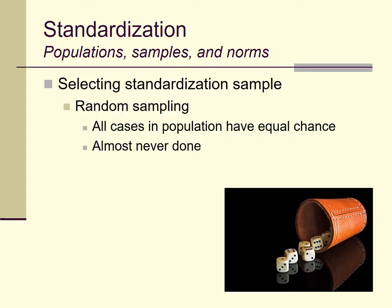How would you give everyone in the United States, let alone the entire world, a number, then contact them and be assured they'd be willing to be in your study? In practical terms, random sampling of a population is pretty much never done.